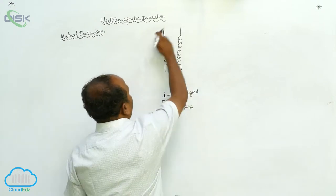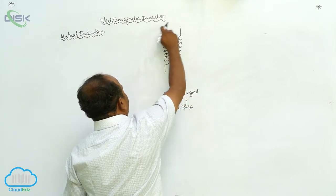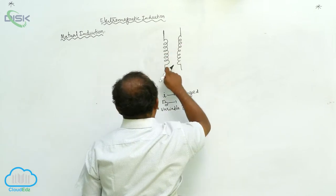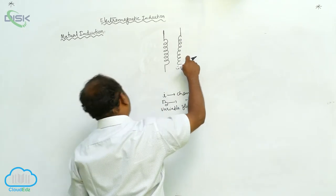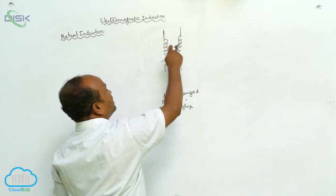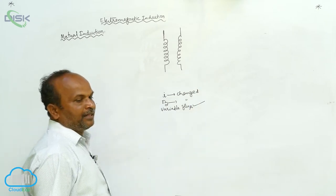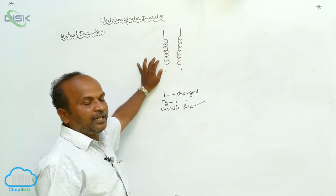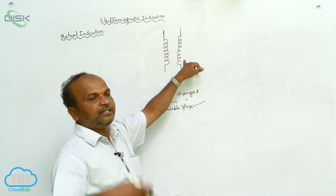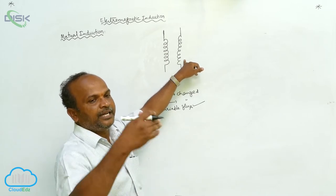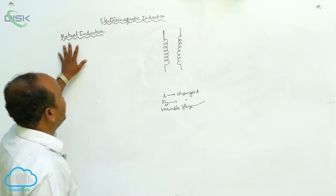There is a variable magnetic flux around the first coil. Now whenever there is a variable magnetic flux nearby the first coil and there is a second coil placed in that region where magnetic flux is produced, the variable magnetic flux is also linked with the second coil. In the second coil there is a variable magnetic flux, thereby there is an induced EMF. Such a phenomenon is called mutual induction.